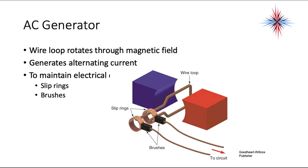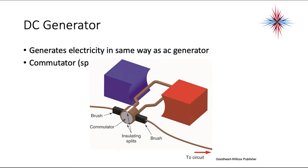An AC generator, alternating current generator, is one example of how we use a magnetic field. The wire loop rotates through a magnetic field, and it generates alternating current. To maintain the electrical connections, slip rings and brushes are used. What rotates the wire could be a gas engine, could be hydroelectric, could be wind. But because of that rotation through the magnetic field, we're going to generate power. A DC generator operates in the same way as an AC generator.